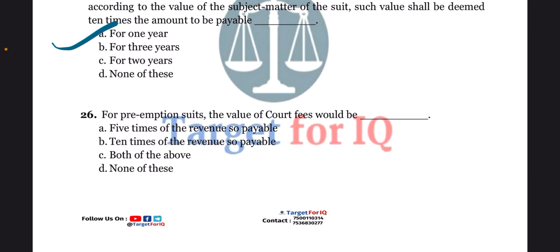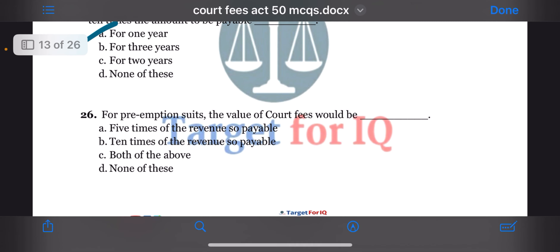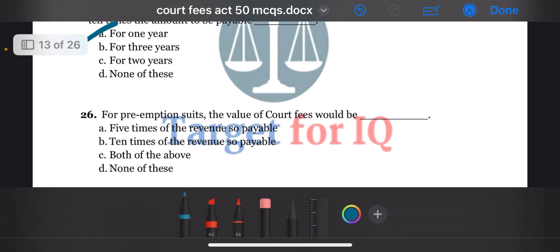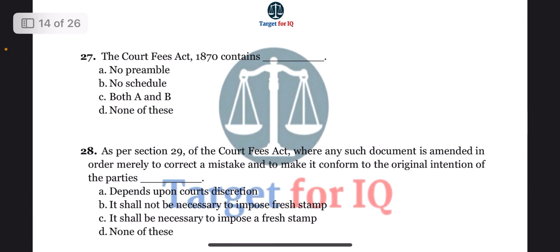Next question: for preemption suits, the value of court fees would be. The options are A. 5 times of the revenue so payable, B. 10 times of the revenue so payable, C. Both of the above, or D. None of these. The correct answer is option B. 10 times of the revenue so payable.